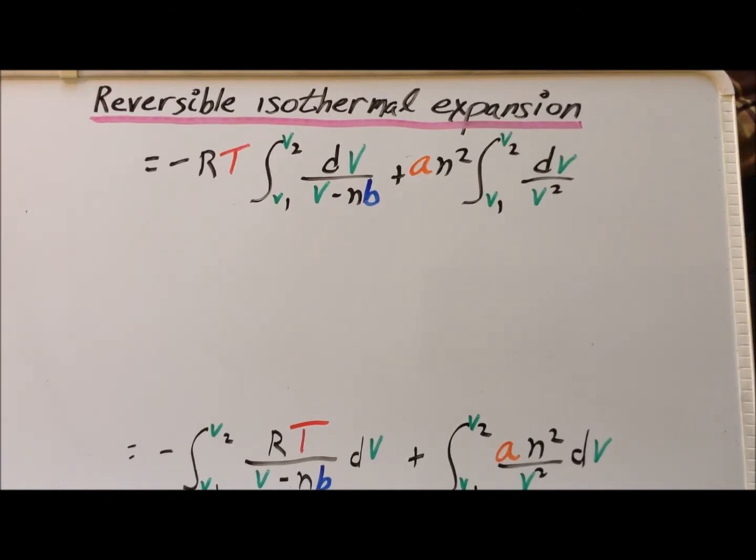Again, we can use the properties of integrals to tidy up. We can pull the RT out in front here, just as well as pulling the AN squared. So we can more clearly see the critical parts of the integral, which is dV over V minus NB, and then dV over V squared.